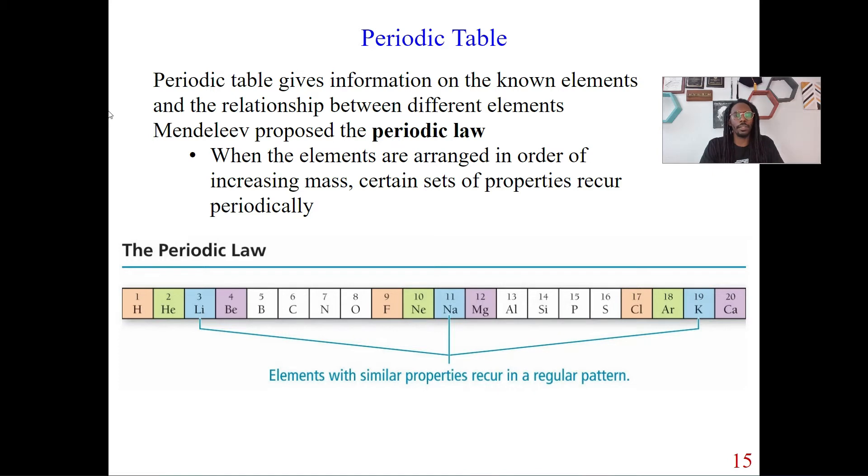Now, the periodic table was discovered by this guy named Mendeleev. And he basically came up with a lot of the different elements. He actually discovered around 65 other elements on the periodic table. So he found a lot of the elements. And the way that he found it is because he proposed a law. So Mendeleev proposed this law, the periodic law.